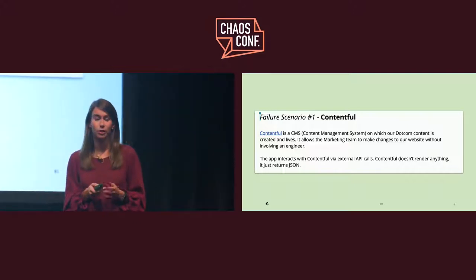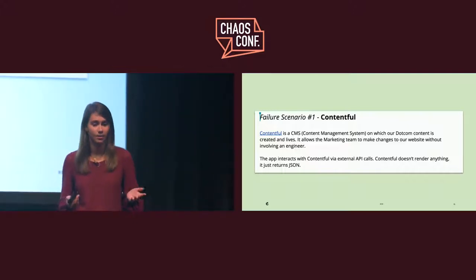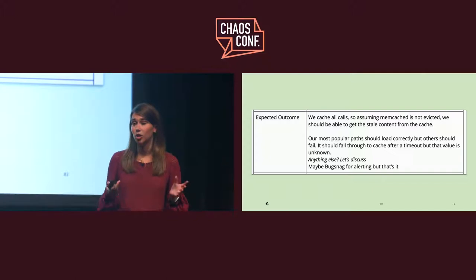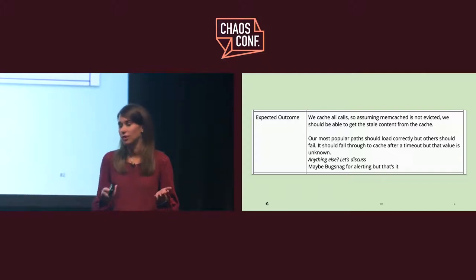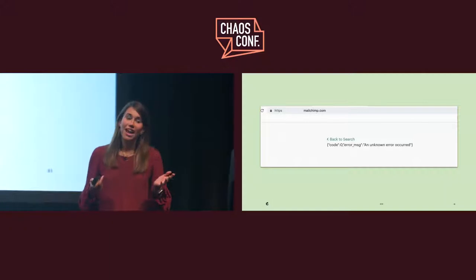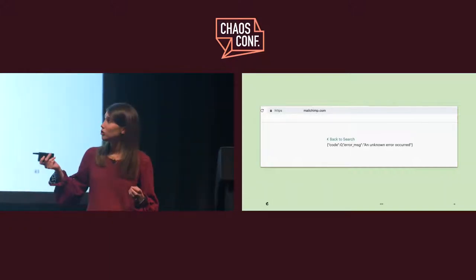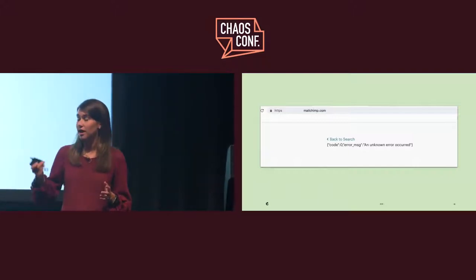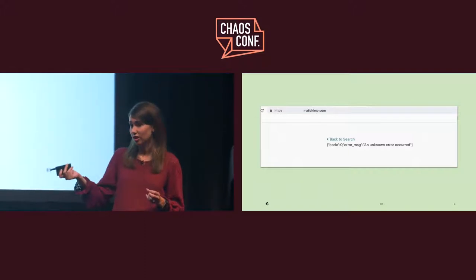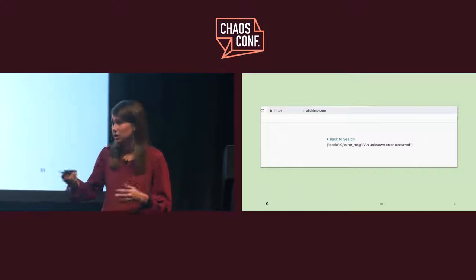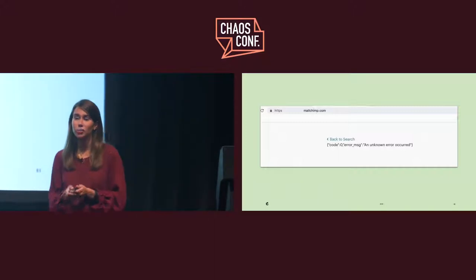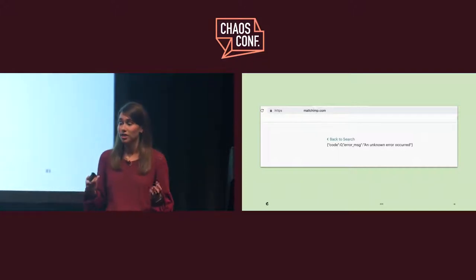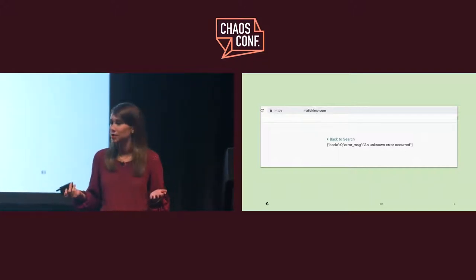Contentful is a content management system that we use for loading static data like our marketing site. When we blocked network traffic between MailChimp and Contentful, we expected to see anything in our popular paths cached and then hopefully some alerting. We did see some caching and alerting, but we also learned that our front end wasn't actually looking at the content of the message — it was only looking at the response code. In this case, this was actually a 200 success response code, but it clearly isn't actually successful because that error message was being returned. Making that small change so our front end checks for error messages is a great way to prevent our customers from seeing that confusing message.